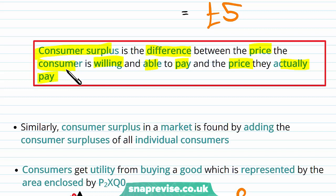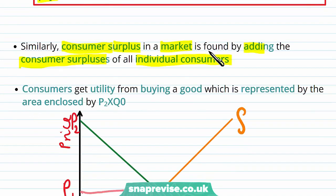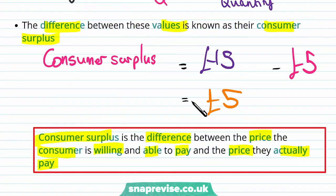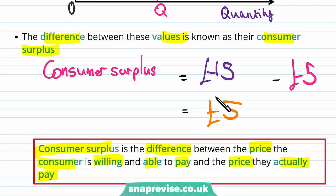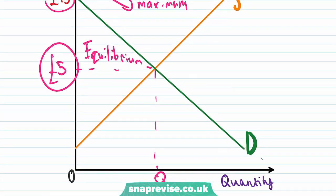So any consumer technically along this demand curve is willing and able to pay £15 for the umbrella. Similarly, Consumer Surplus in a market is found by adding the Consumer Surplus of all individual consumers. So we are going to work that out because this £5 here, that Consumer Surplus is what is earned by the consumer who is willing and able to buy at this equilibrium quantity.